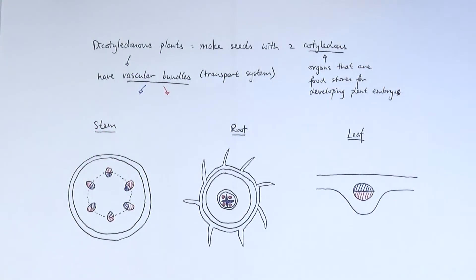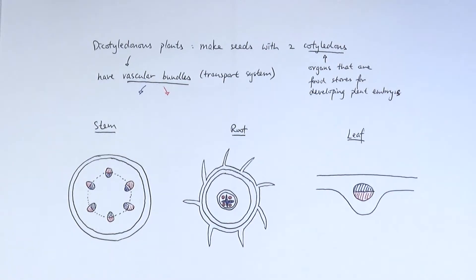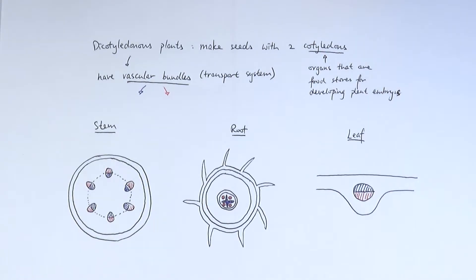In this video we'll be looking at the vascular bundles that we can find in dicots. Dicots stands for dicotyledonous plants, which are plants that can make seeds that contain two cotyledons. Cotyledons are basically organs that act as food stores for developing plant embryos. You won't ever get questions about explaining in detail what the dicots are, but you do need to know that dicots contain vascular bundles, which are basically their transport system, and you need to know about the structure of both different aspects that make up the entire vascular bundle.